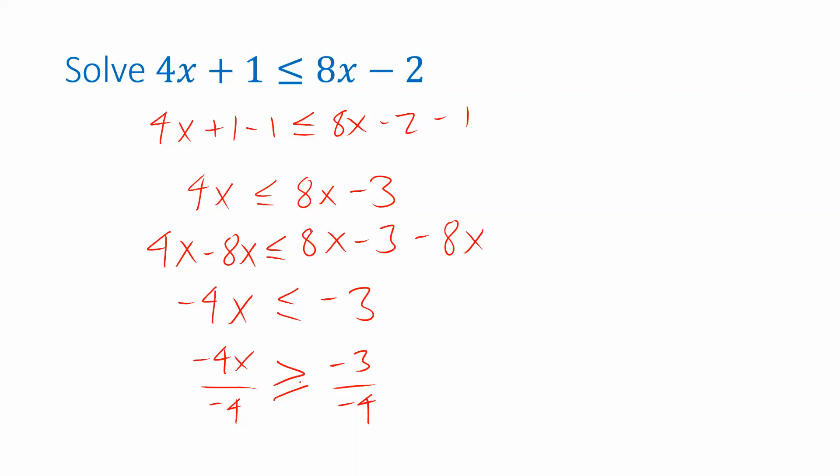What's this going to leave us with? Well, we're going to have x isolated on the left. On the right, negative 3 divided by negative 4. You can simplify and write it as 3 fourths. And so our answer could be expressed with inequality notation. X is greater than or equal to 3 fourths.